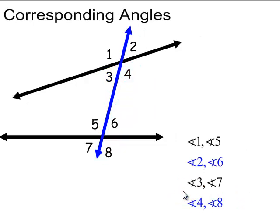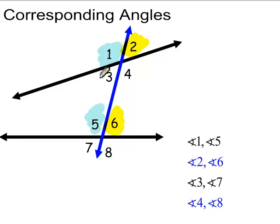Corresponding angles are on the same side of the transversal, and you're looking above the line being cut in both cases. Angles 2 and 6 are a pair, and angles 1 and 5 are a pair of corresponding angles. Angles 3 and 7 are a pair of corresponding angles, and angles 4 and 8 are a pair of corresponding angles.